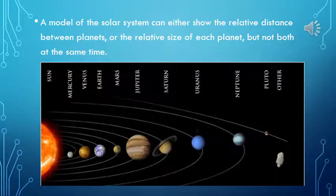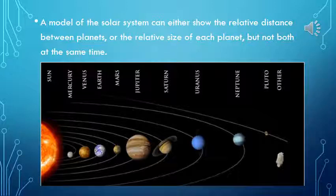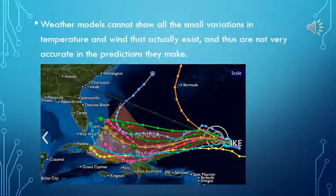A model of the solar system can either show the relative distance between planets or the relative size of each planet, but not both at the same time. Weather models cannot show all the small variations in temperature and wind that actually exist, and thus are not very accurate in the predictions they make.